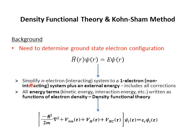The first assumption is to simplify any many-electron system to a one-electron system plus an external potential. The second assumption is to simplify all energy terms — including kinetic energy, interaction energies between nucleus and electrons, and between electrons — written as functions of electron density, which is called density functional theory. Based on these two assumptions, we can expand the Hamiltonian into a simple format including kinetic energy, potential energy representing the interaction between nucleus and electrons, and potential energies representing electron-electron interactions, along with the wave functions and eigenvalues representing electron energies.